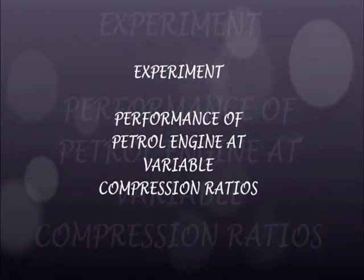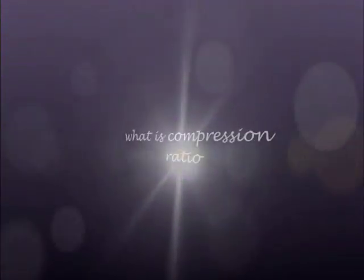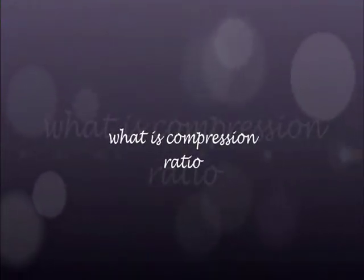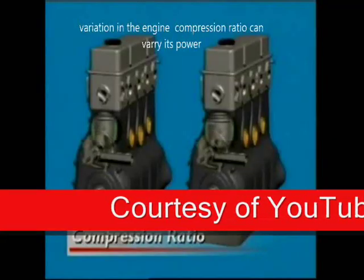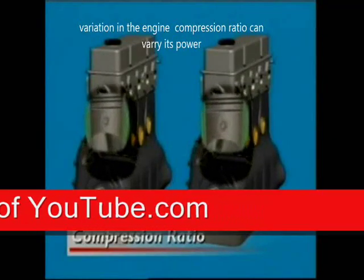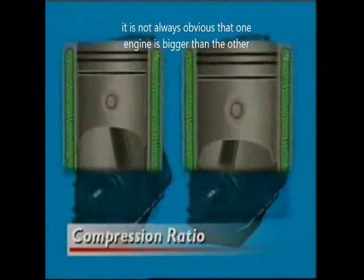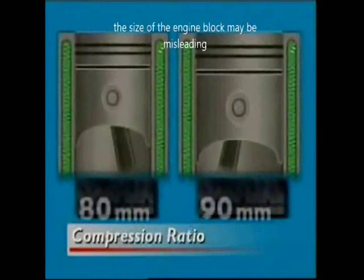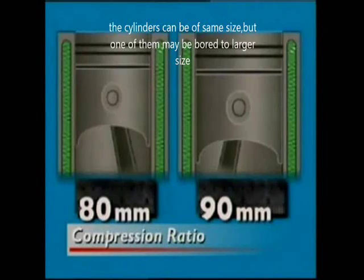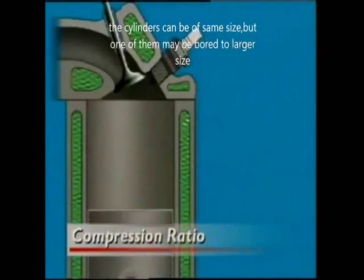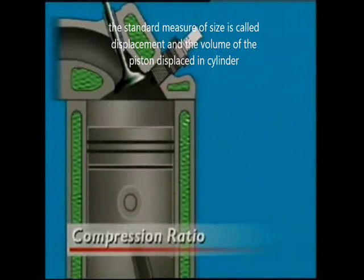This experiment examines the performance of a petrol engine at variable compression ratios. Variation in engine compression ratio can affect its power output. It is not always obvious that one engine is bigger than another, as the size of the engine block can be misleading — two blocks can have the same size, but one of the cylinders can be bored to a larger volume. The standard measure of size is called displacement.